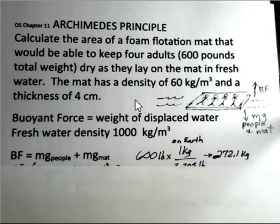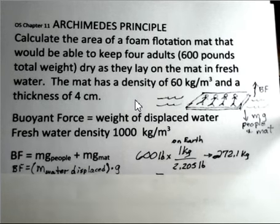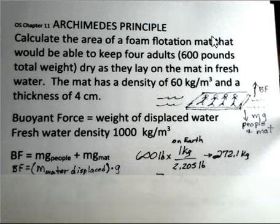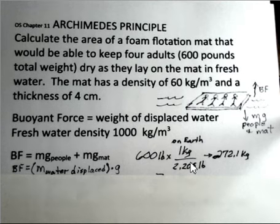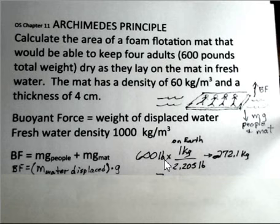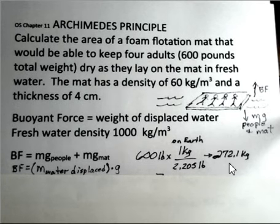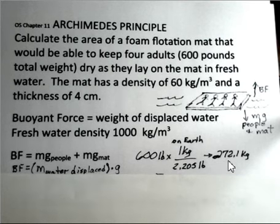First, converting pounds to kilograms on Earth — you can look this up in a book or on the internet. One kilogram on Earth has a weight of 2.205 pounds. So I need the pounds to be in the denominator of the conversion factor to cancel the pounds unit, and we end up with 272 kilograms for the mass of the people.